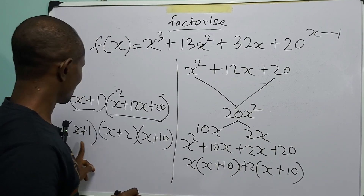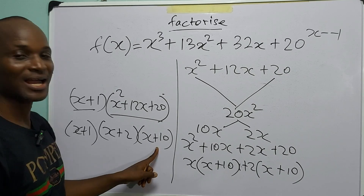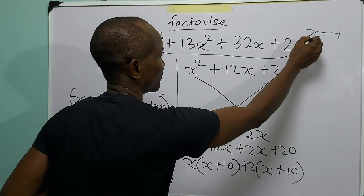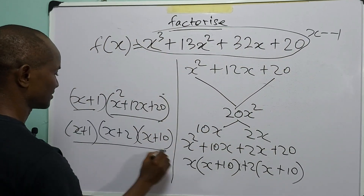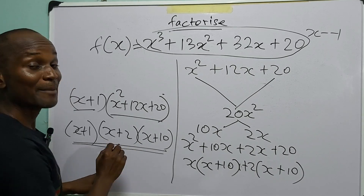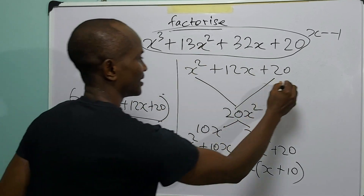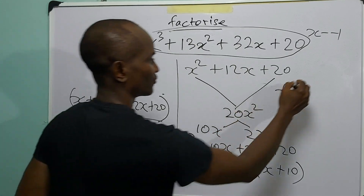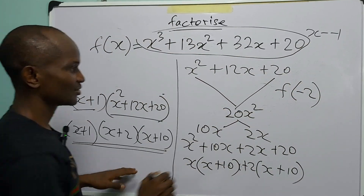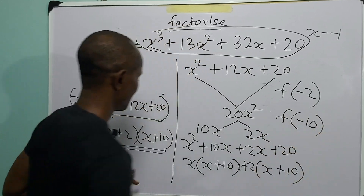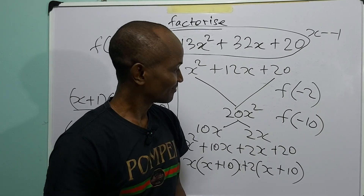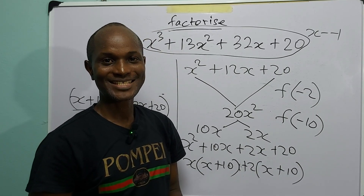We have found three factors: (x + 1), (x + 2), and (x + 10). So the full factorization is (x + 1)(x + 2)(x + 10). To verify, you can find f(−2) and f(−10) and check that both give zero. And that's it for today — see you in the next one.